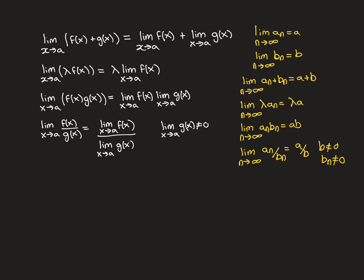Finally, if you create a third sequence by dividing each term of a_n by the corresponding term of b_n, to find the limit you need all terms of b_n to not equal zero — otherwise terms would be undefined. If that holds and b is not equal to zero, then this sequence converges to the quotient of the two limits, a over b.